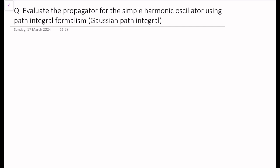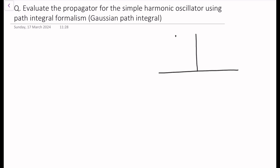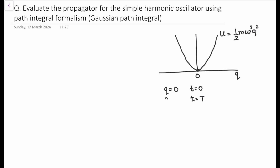In this problem we are trying to evaluate the propagator for a simple harmonic oscillator, which takes the form of a Gaussian path integral. Given a harmonic potential half m omega squared q squared, a particle is placed at q equal to zero at time t equal to zero. The question is: what is the probability amplitude that at a later time t the particle is still at q equal to zero? We label initial and final states with subscripts a and b, so the propagator is written as q_b equals zero at t_b, given q_a equals zero at t_i equals zero.